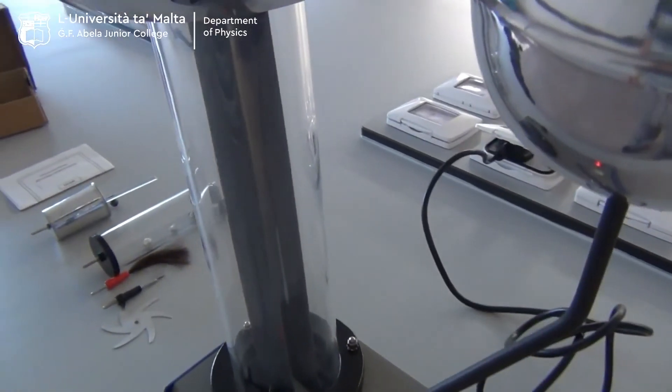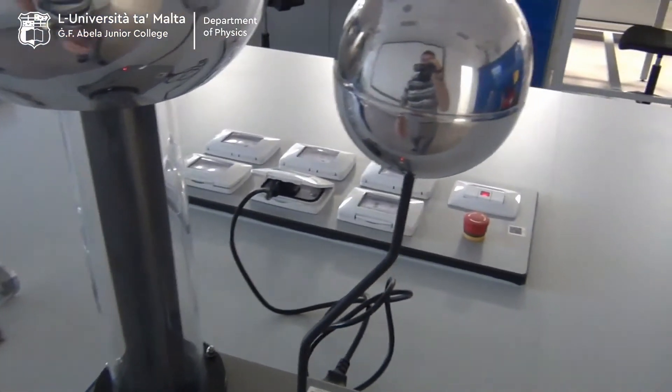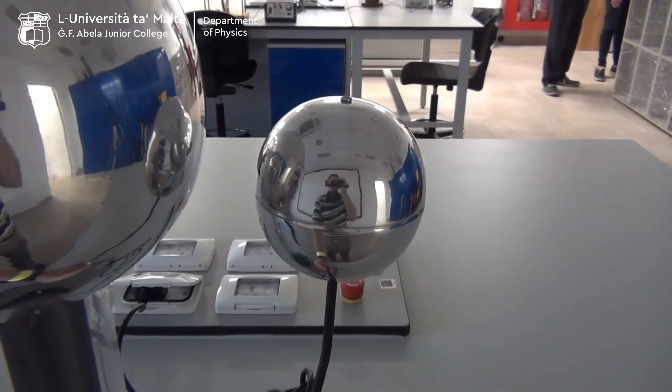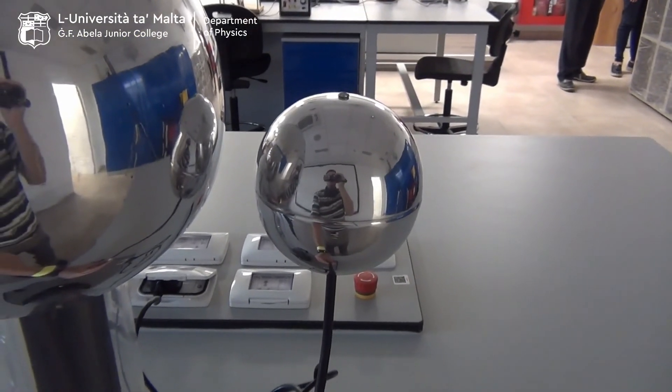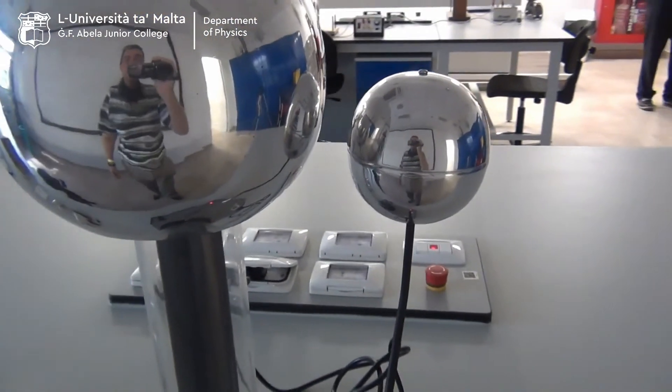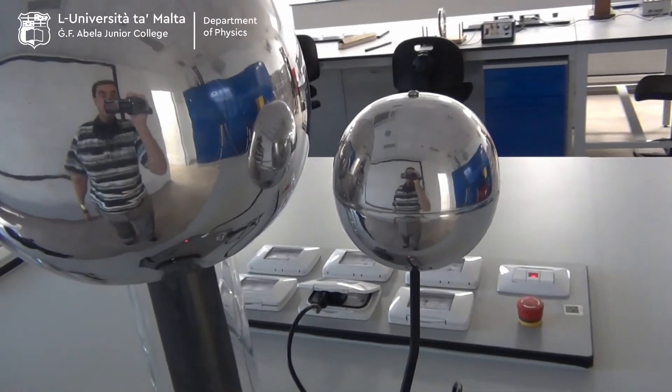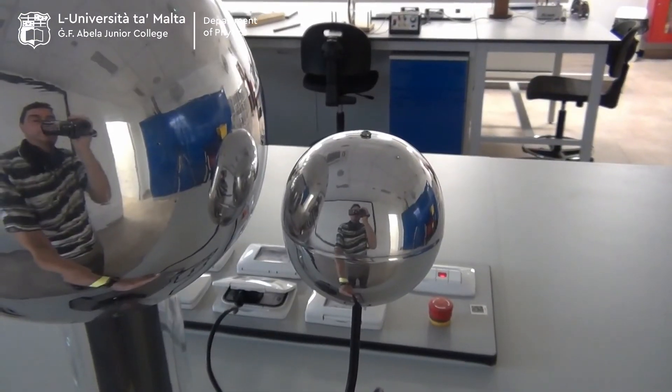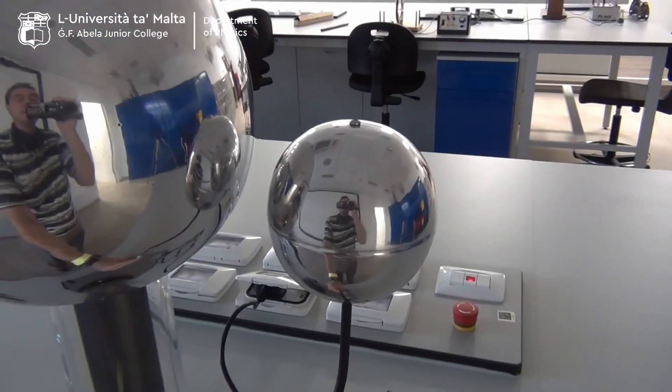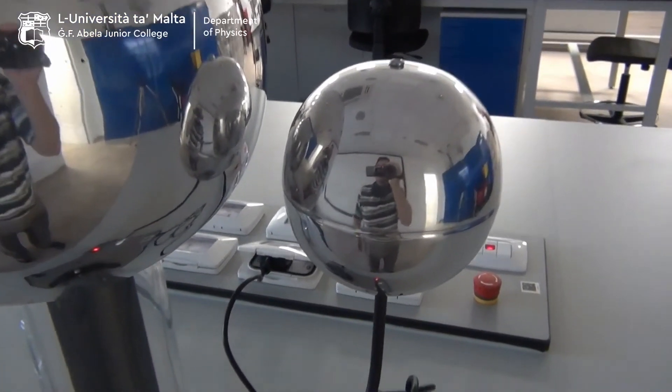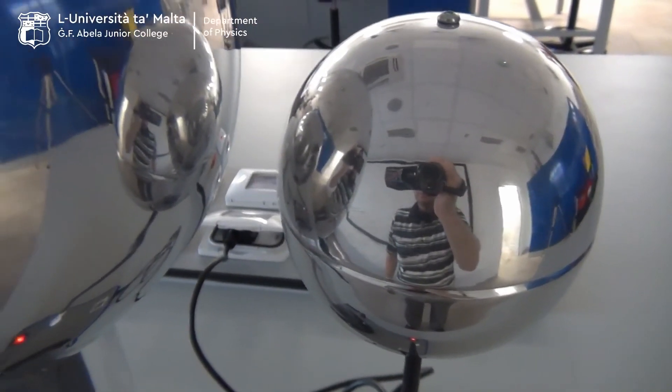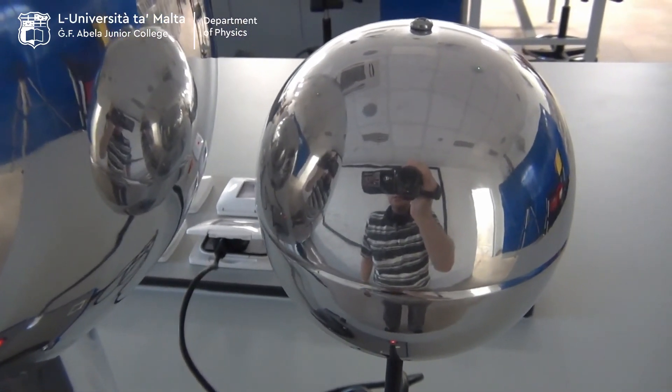The belt is spinning. Then we shall rotate this dome to come closer to the upper dome. When the voltage is high enough, it will start to spark. And that is the spark.